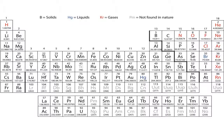Your horizontal rows are called periods. Period one has just hydrogen and helium in it. Period two has lithium, beryllium, boron, carbon, nitrogen, oxygen, fluorine, and neon. Periods continue downward: three, four, five, six and so on. So you can find any element by specifying its group and period — for example, group two period two is beryllium, and group one period three is sodium.